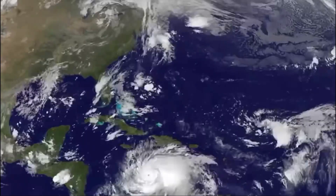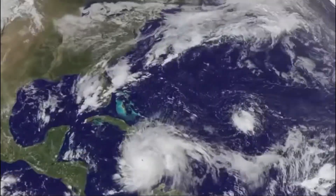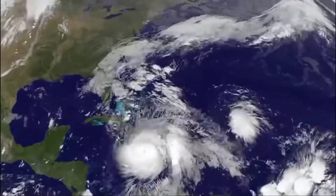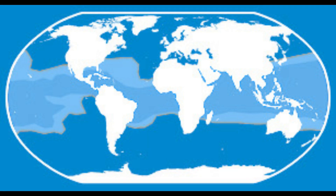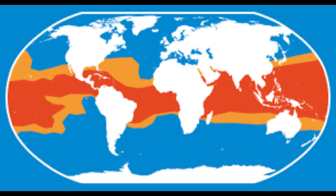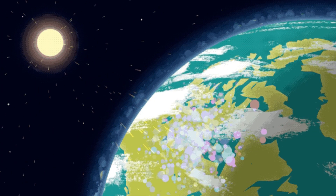A cyclone is a general term for a weather system in which winds rotate inwardly to an area of low atmospheric pressure. Cyclone Nivar is a case of tropical cyclone. Tropical cyclones are formed in the low pressure tropical regions, which are the regions near the equator. These regions receive maximum sunlight due to the direct and vertical solar radiations.